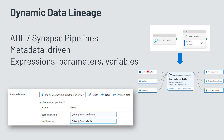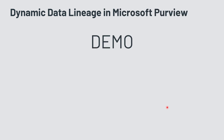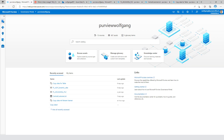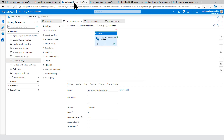What wasn't possible until a few days ago — which I just found out about — is dynamic data lineage being pushed from Azure Data Factory or Synapse into Microsoft Purview. It was an unsupported feature. Now let's have a look.